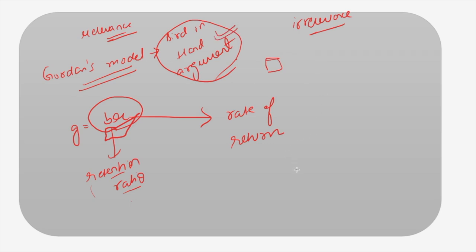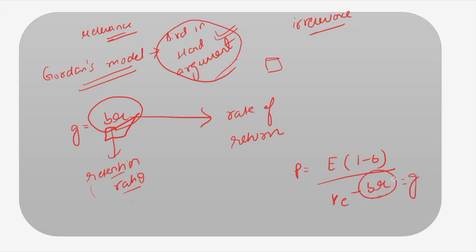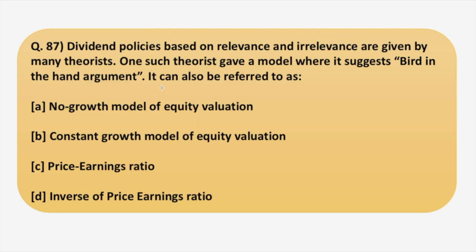The formula for Gordon's model: the market price of an equity share equals E(1−B) divided by (Ke − BR), where 1−B is the payout ratio, Ke is the cost of equity share capital, and BR equals G, the growth rate. The model assumes a constant growth in the firm. The answer to this question is option B — the constant growth model of equity valuation.